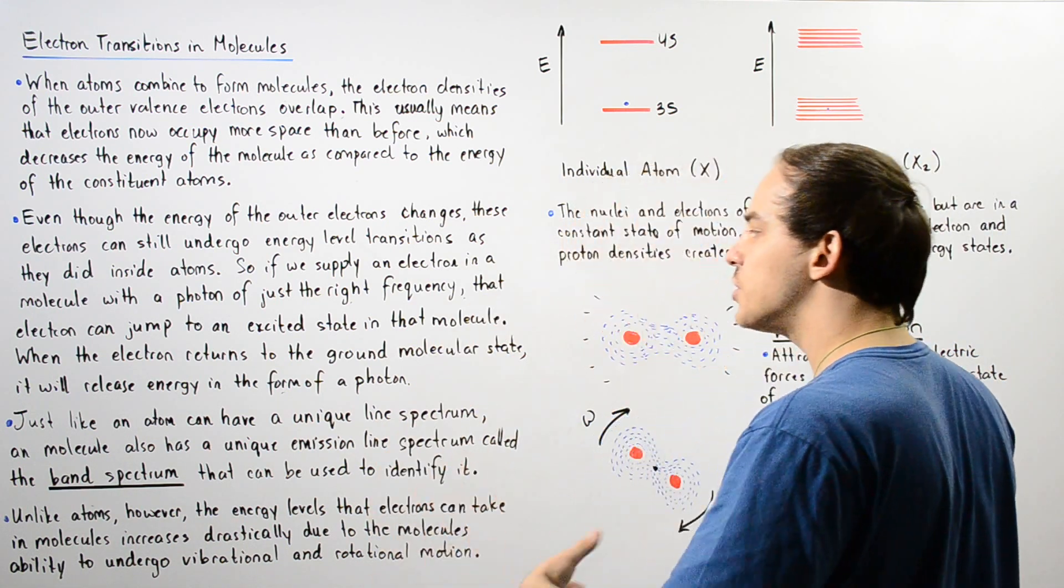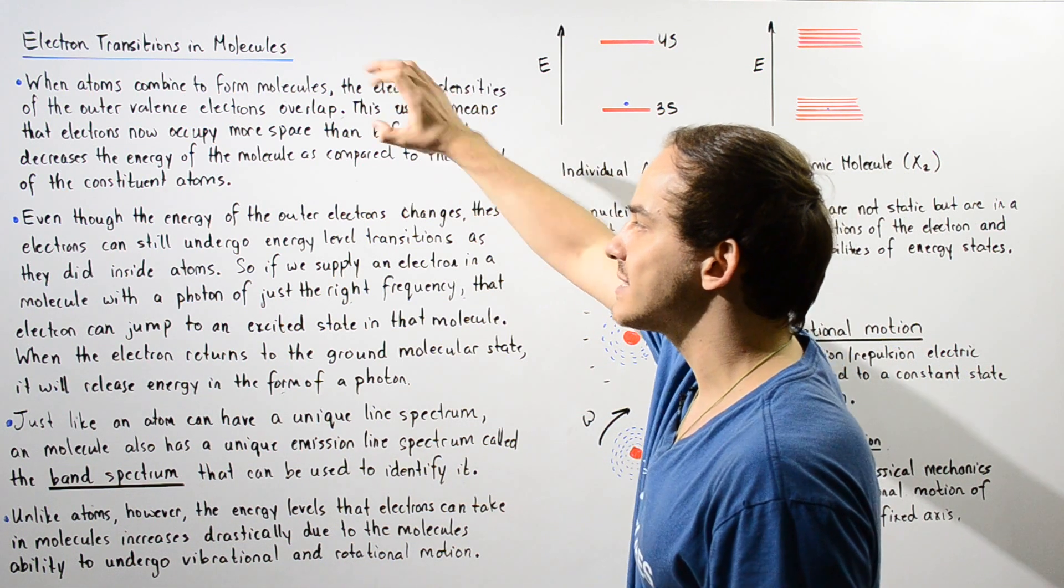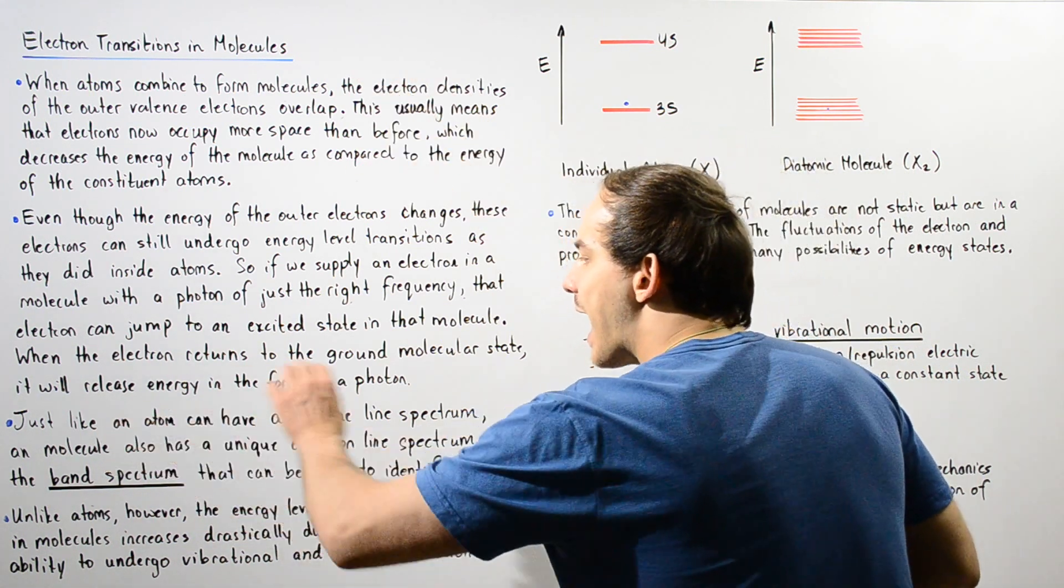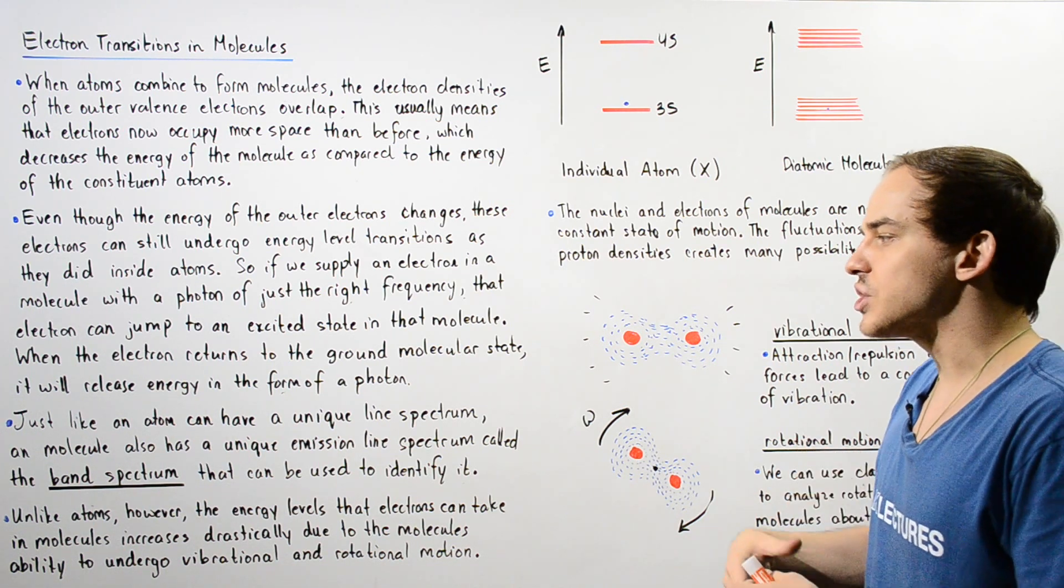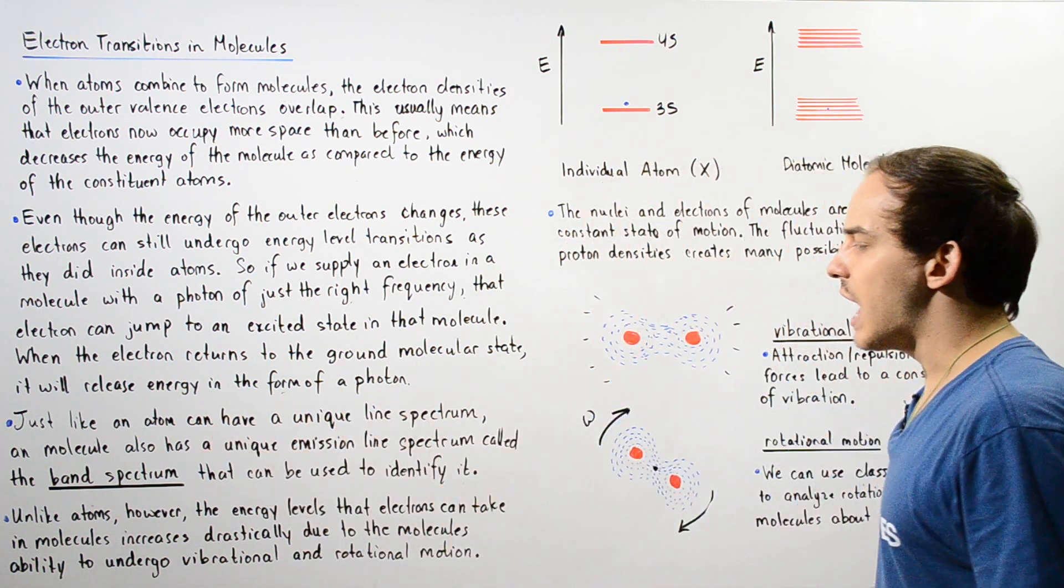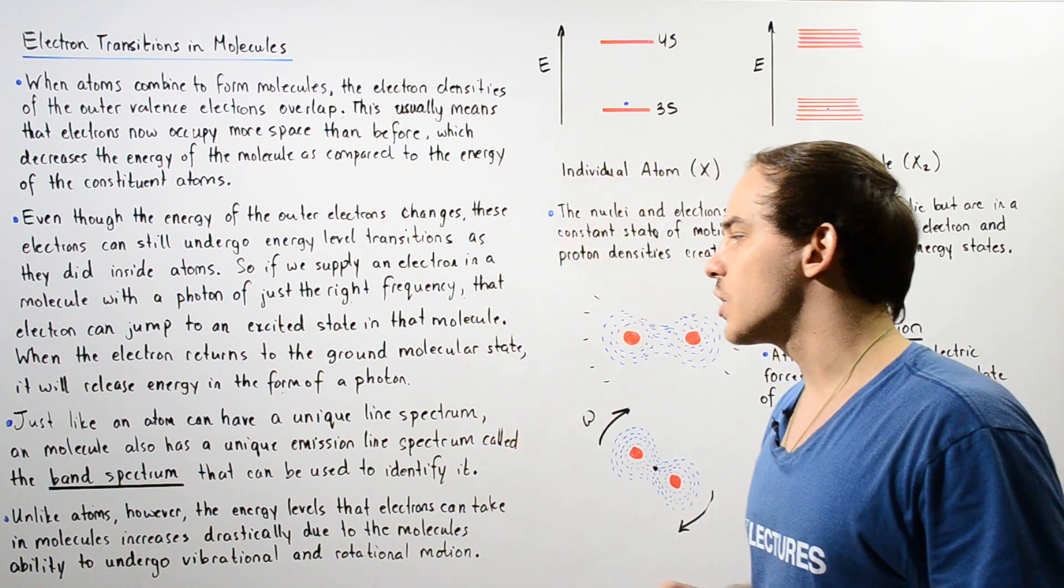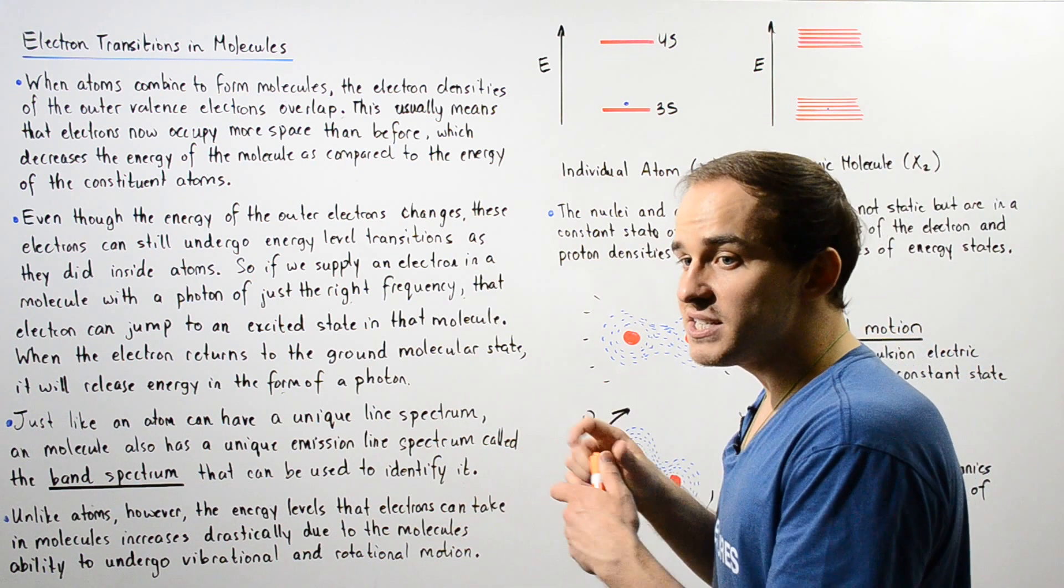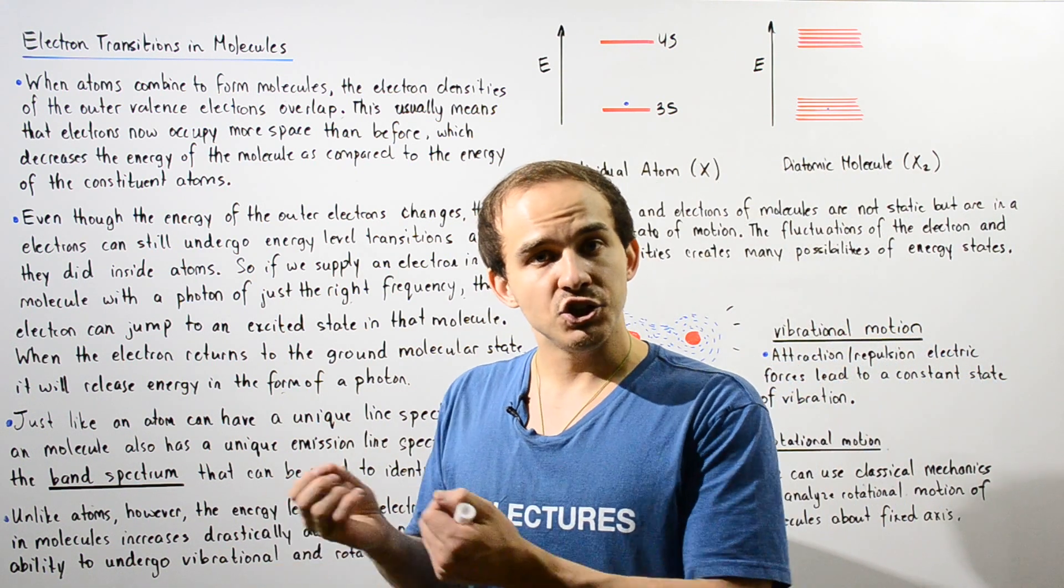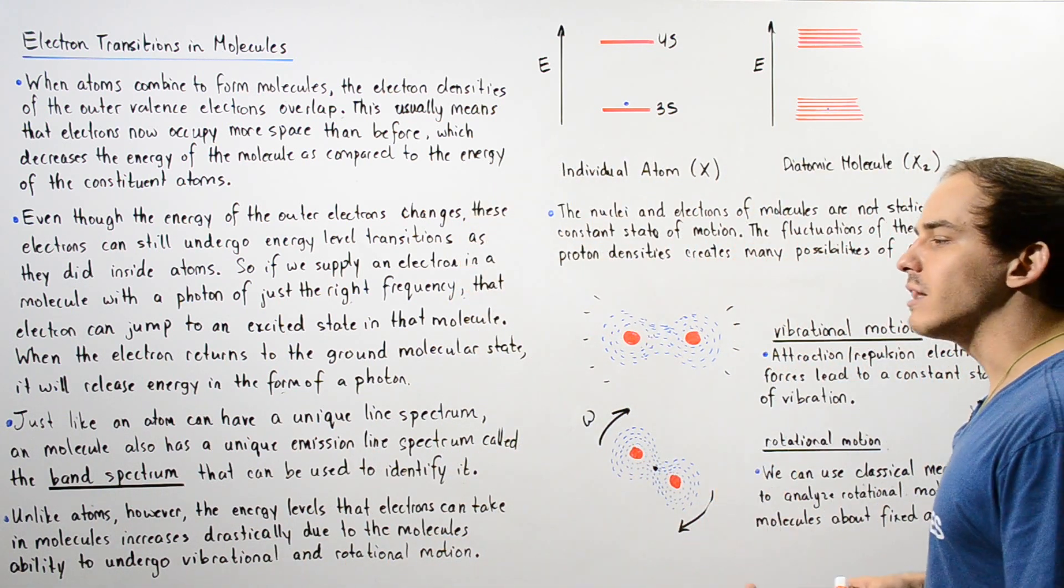So just like an atom can have a unique line spectrum for the emission of photons when electrons go from excited to ground state, molecules can also undergo these transitions. We also have a unique emission line spectrum called the band spectrum. This band spectrum is unique to that specific molecule, and we can use it to identify what the molecule is.